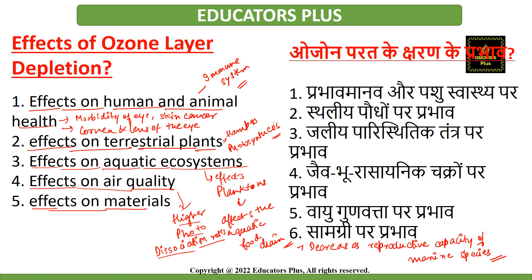Regarding the effects on materials: synthetic polymers, naturally occurring biopolymers, and other materials of commercial interest are adversely affected by solar UV radiations. The use of such materials — particularly plastics — in situations demanding routine exposure to sunlight is only possible through light stabilizers or surface treatment to protect them. Any increase in solar UV radiation content due to partial ozone depletion will accelerate photodegradation rates of these materials, limiting their outdoor lifespan.